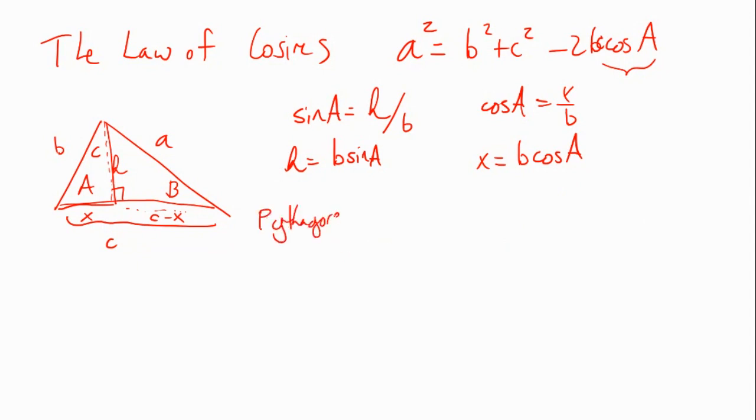If I apply the Pythagorean theorem to the right triangle, and there's my neighbor's dog on cue, I end up with C minus X squared plus H squared equals the hypotenuse A squared. Now we just have to expand out this thing on the left. We end up with C squared minus 2CX plus X squared plus H squared equals A squared.